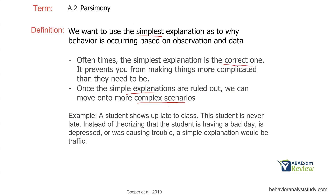For example, a student shows up late to class — a student who is never late. Instead of thinking the student is having a bad day, might be depressed, or is causing trouble, what if there was just traffic? That might seem obvious, and that's because parsimony is obvious. What is the simplest reason for this behavior to occur? That's what you want to identify first.